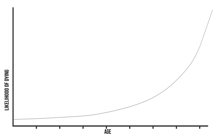If every year you were to buy a new one-year life insurance policy, you could use this same graph and replace the likelihood of dying with the insurance premium in dollars — the fancy word for the cost of the insurance.